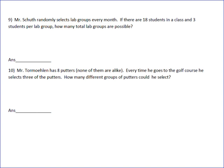Okay, so on this problem we're doing counting problems and what we're asked to do is count up a certain number of groups. So it says Mr. Schuth randomly selects lab groups every month. There are 18 students in a class and three students per lab group. How many total lab groups are possible? Meaning how many different combinations of three students can Mr. Schuth put together?